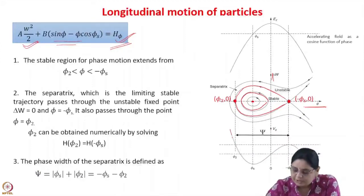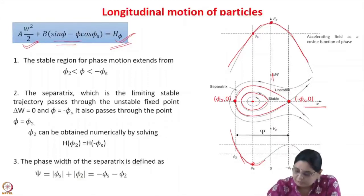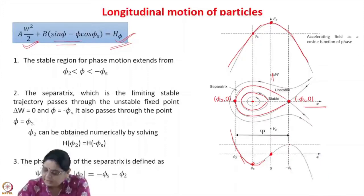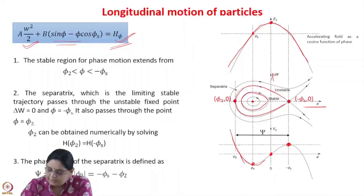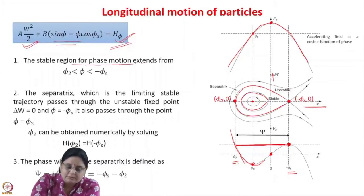We have seen the form of the potential: this is the electric field, this is the synchronous phase, and at the synchronous phase the potential has a minima. At phi equal to 0, the potential is 0. It has a maxima for phi equal to minus phi_s, and the extent of stable motion extends from minus phi_s to phi_2. All particles that lie within this phase region will have stable motion.